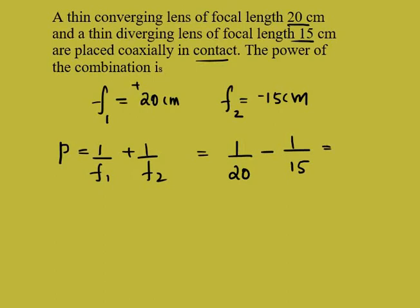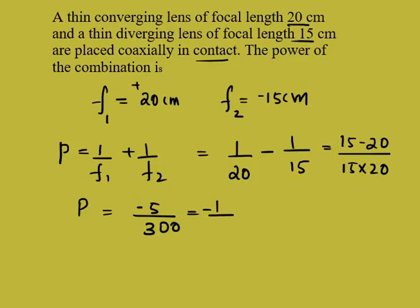So it will be 15 minus 20 divided by 15 into 20. Once you simplify this you will be getting minus 5 by 300. So if you cancel this will be 1 by 60, minus 1 by 60.